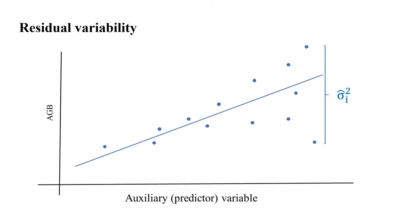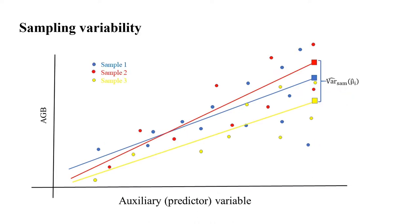Residual variability is simply the scatter of observations around their corresponding predictions. Sampling variability, which seems to be less familiar, is actually the more important of the two sources of uncertainty. For each sample we use to calibrate the prediction technique, we get slightly different predictions. This variability among predictions corresponding to different samples is sampling variability.